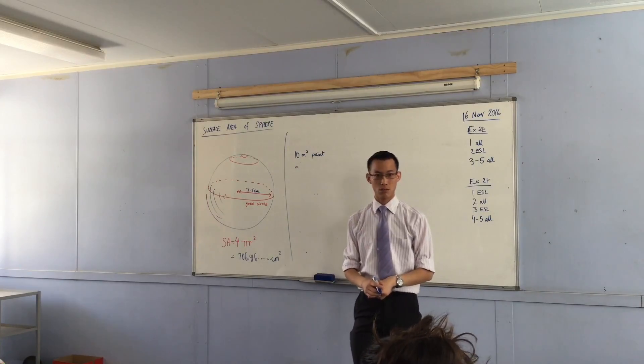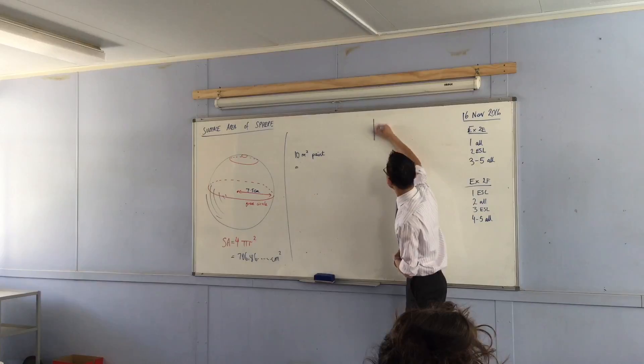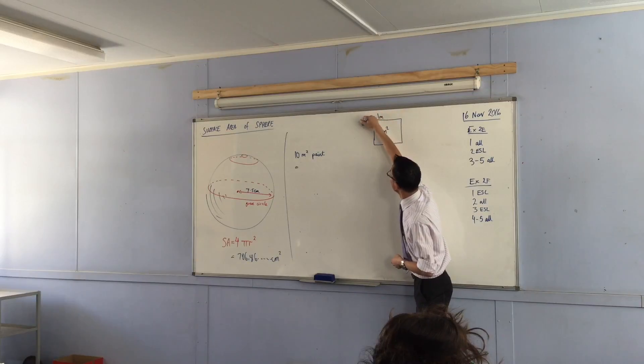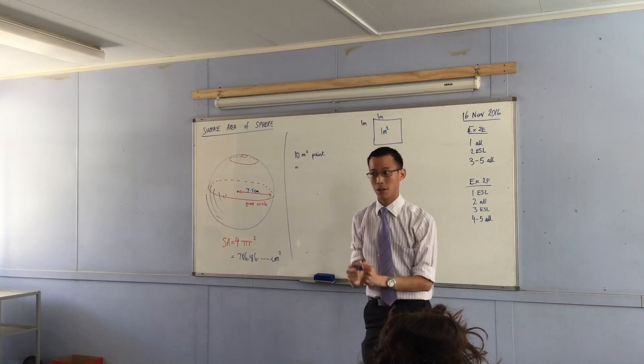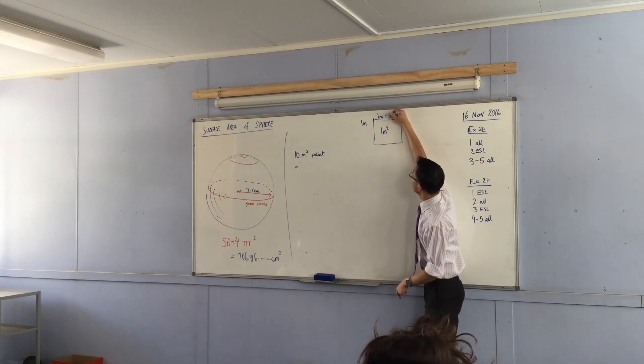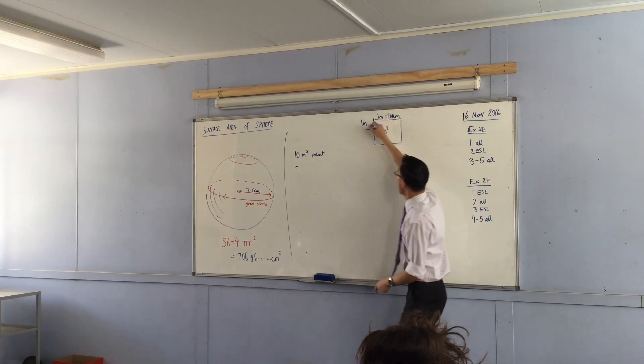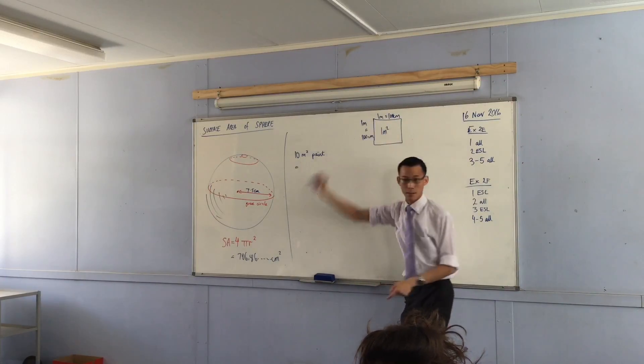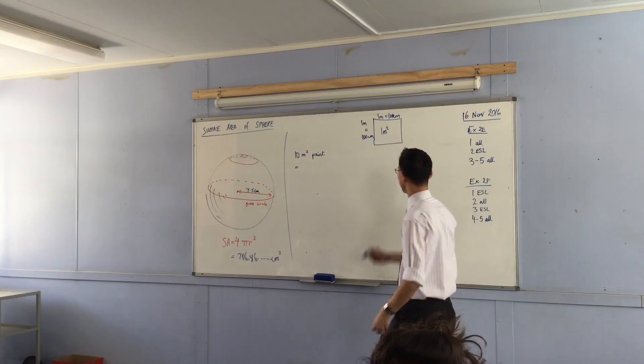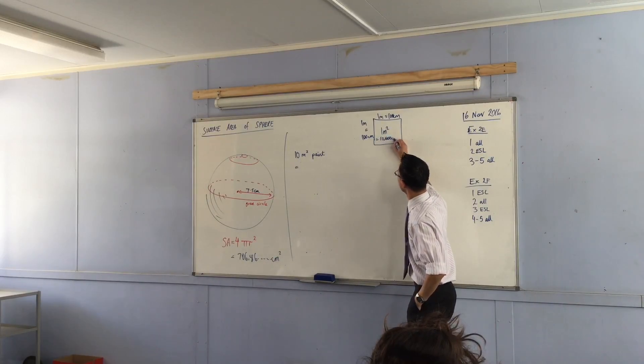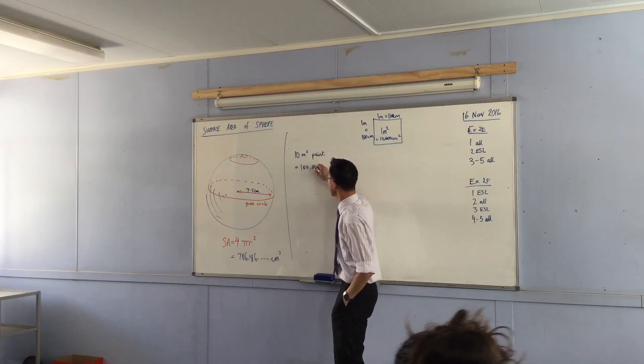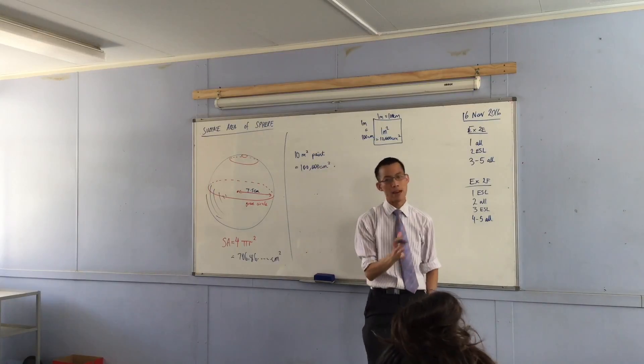If I were to convert this into square centimeters, the first thing I need to remember is that a square meter is one meter by one meter. But then you have to think about the conversion. A meter is a hundred centimeters. And this meter is also a hundred centimeters. So to think about this square, it's a hundred times a hundred. So this is ten thousand square centimeters. Times ten, so therefore, this is a hundred thousand square centimeters. That's how much paint I've got.